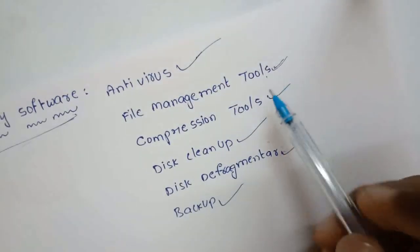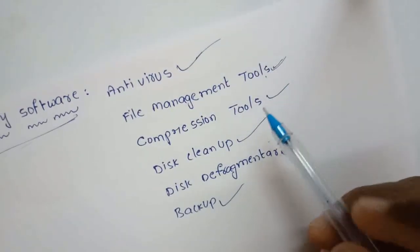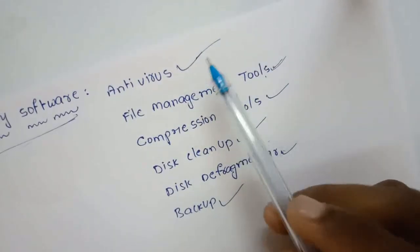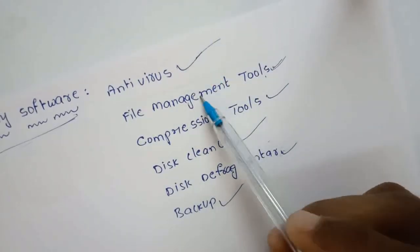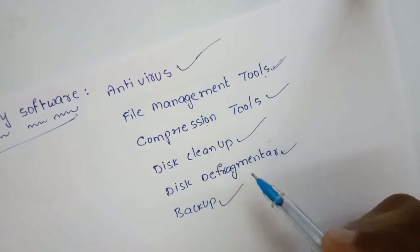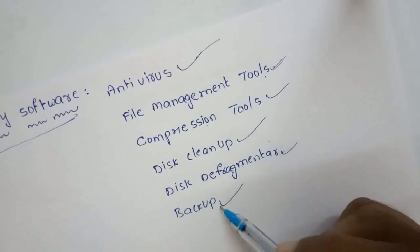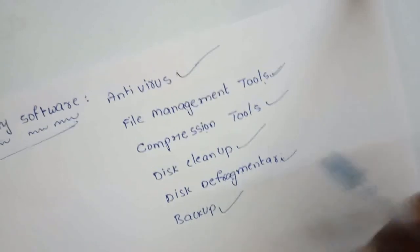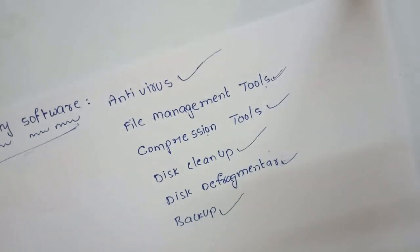So, to summarize the utility software we discussed: antivirus, file management tools, compression tools, disk cleanup, disk defragmenter, and backup. In the next video, we are going to discuss open source software. Until then, thank you.